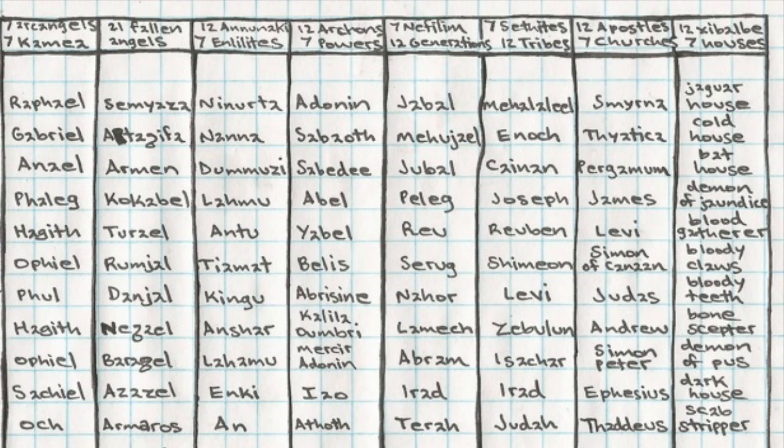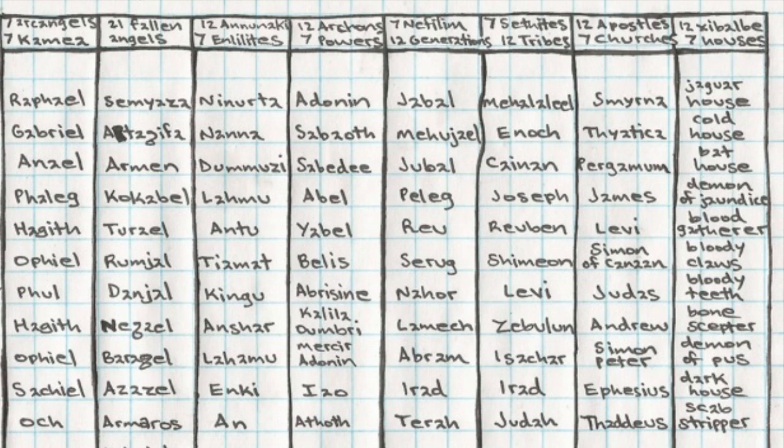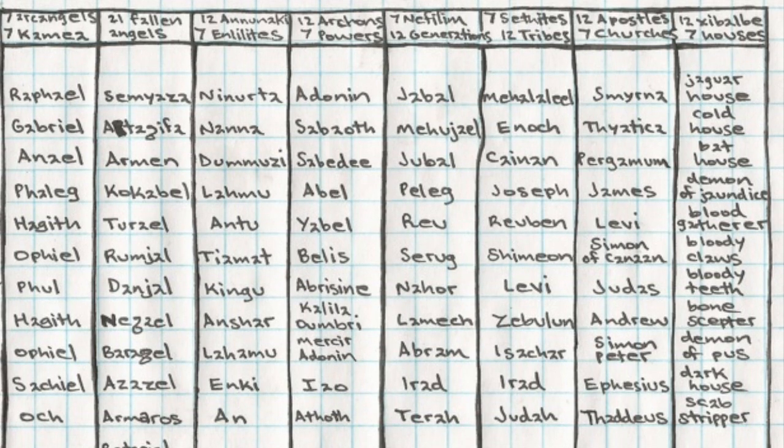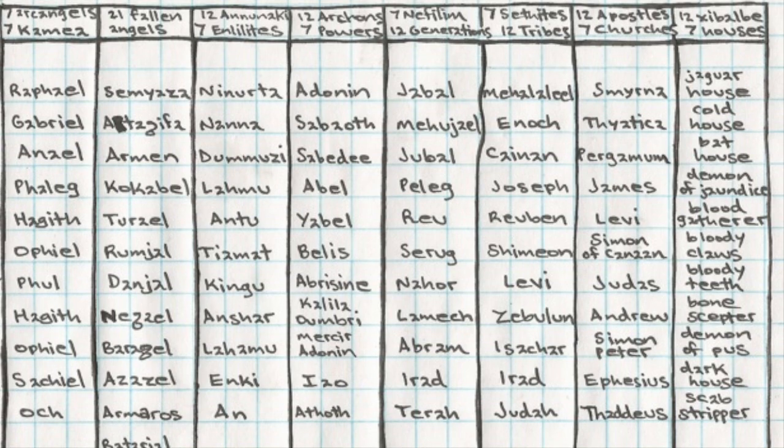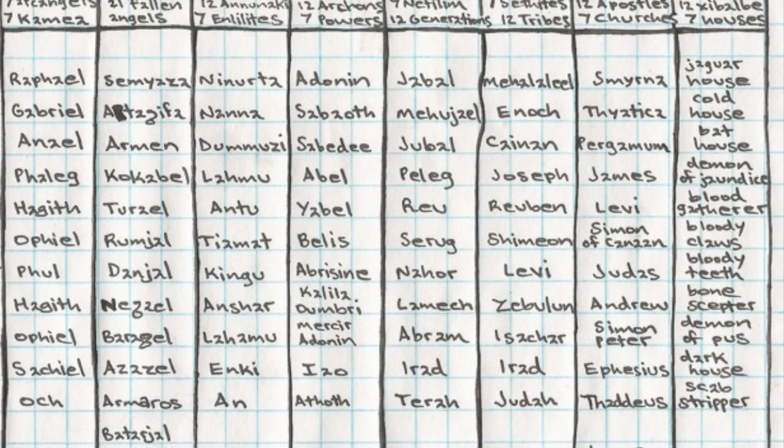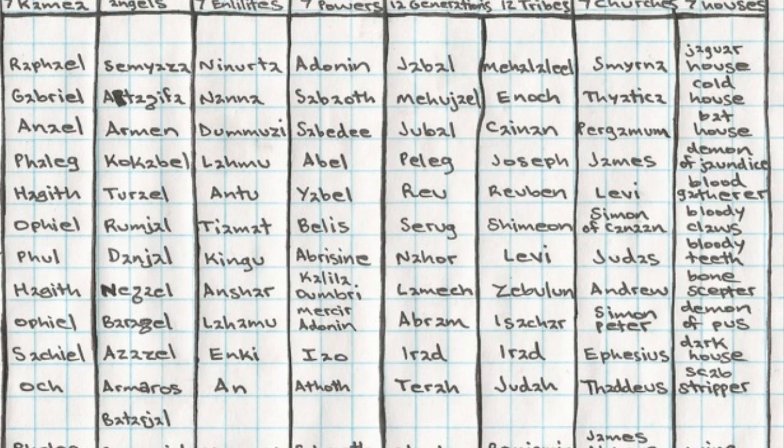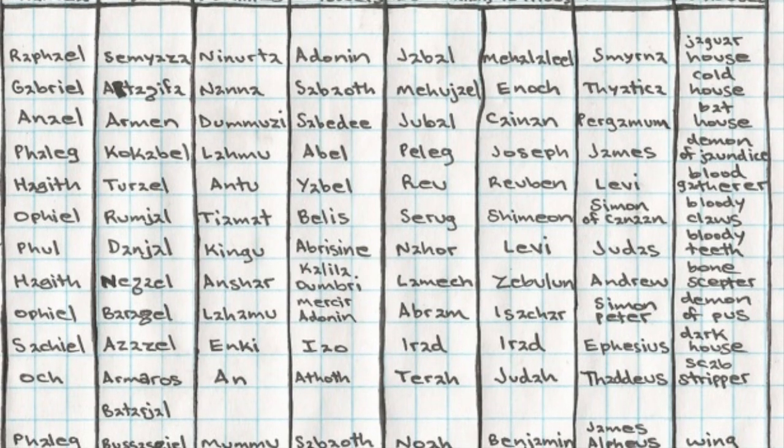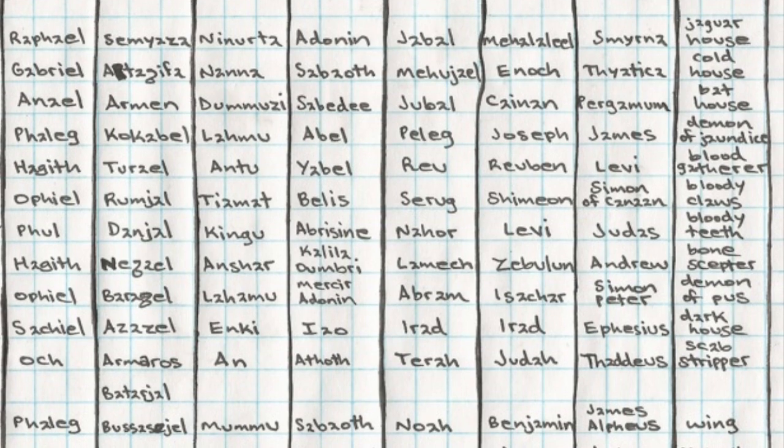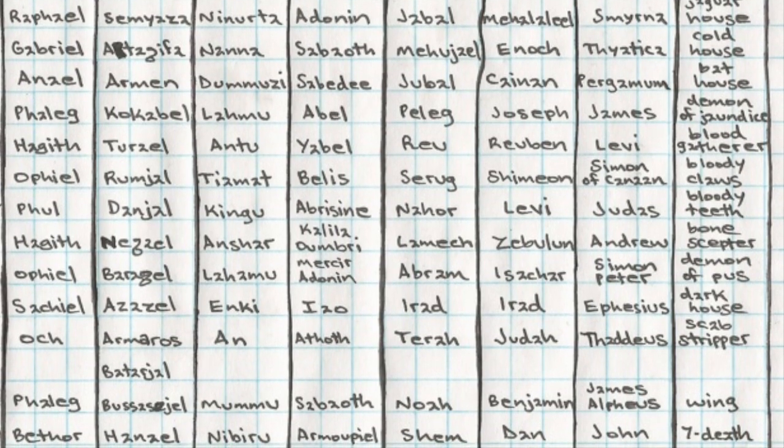In the columns to the right we find a more complex grouping of attribute traits. These begin on the right with the 12 Zibalba gods and seven houses of the Mayan Popal Vuh and proceeding leftward we progress backwards across the aeons of recorded historical time next to the 12 apostles and seven churches of early Christianity. In the third column in from the right we find listed seven Sethites over 12 tribes and these are the seven pre-deluge patriarchs from Seth son of Adam to Enoch the great grandfather of Noah and the 12 tribes of Israel named for the 12 sons of Jacob.